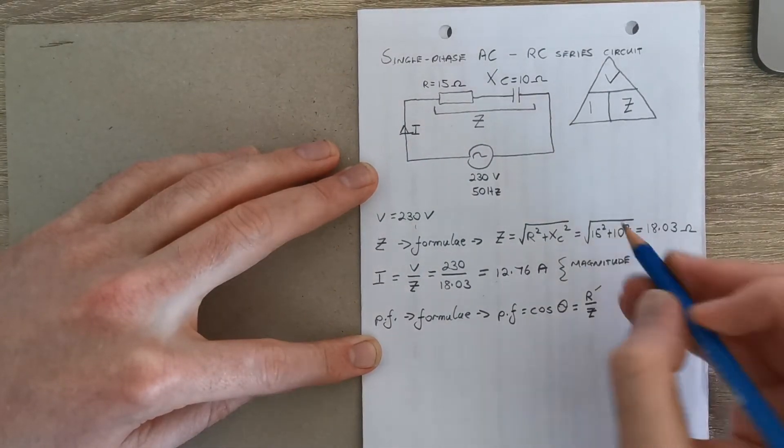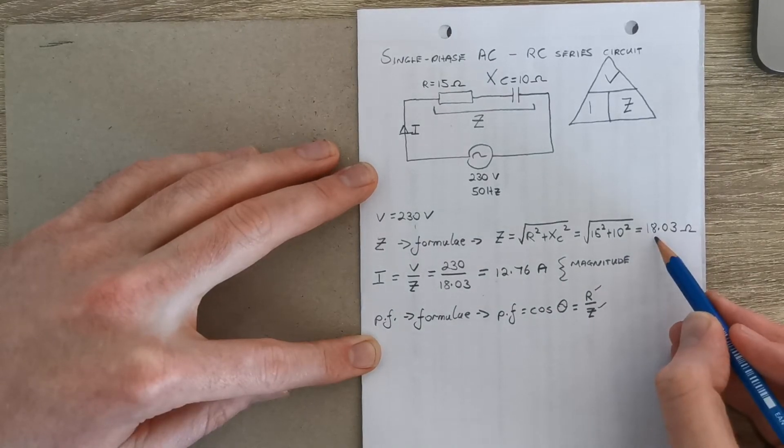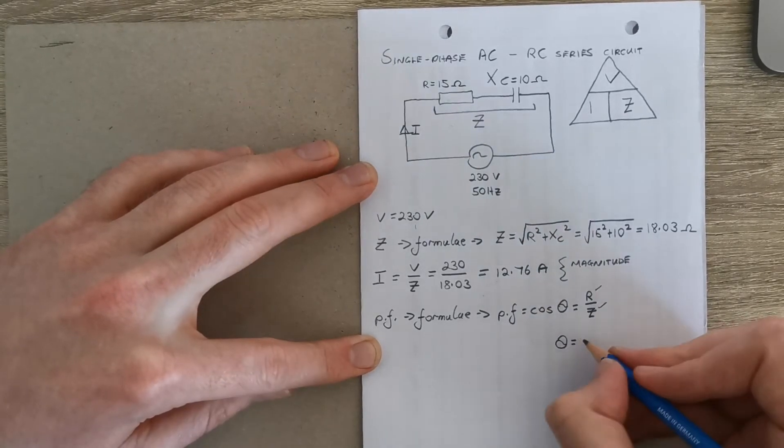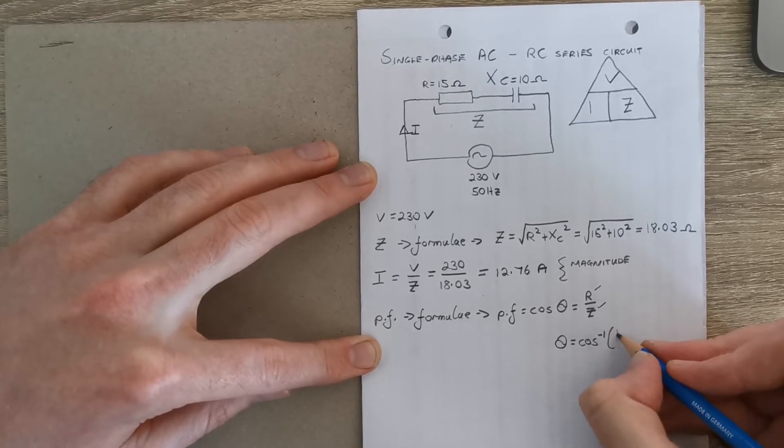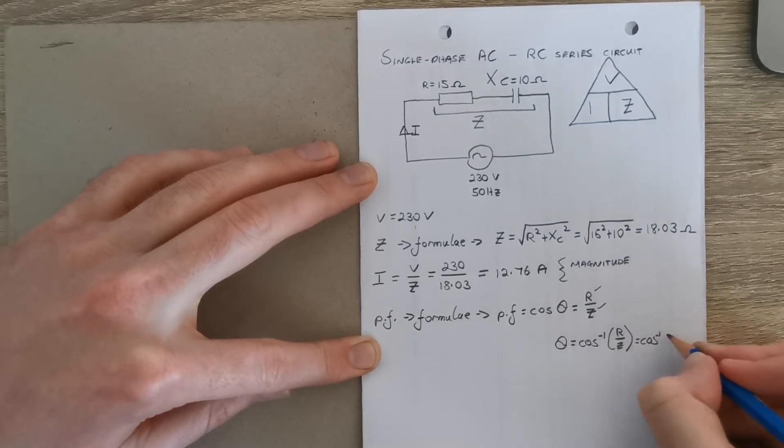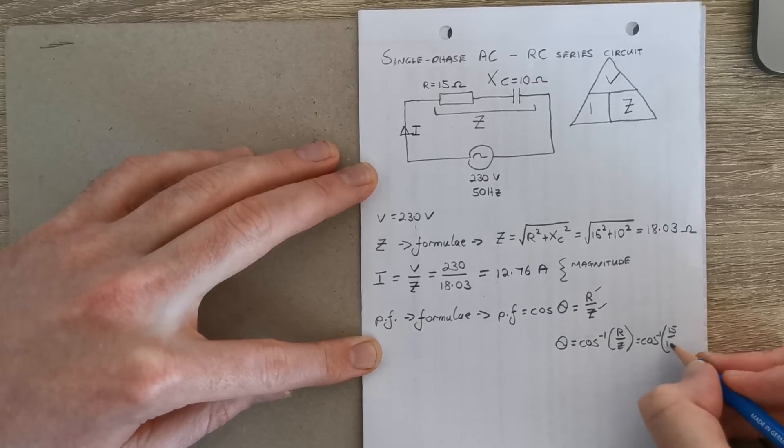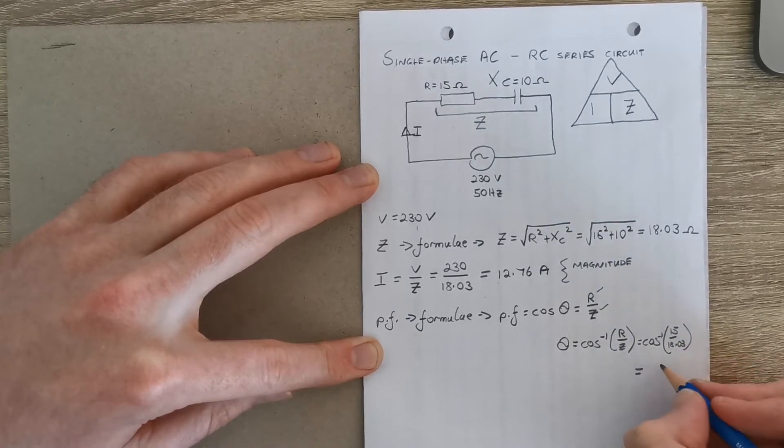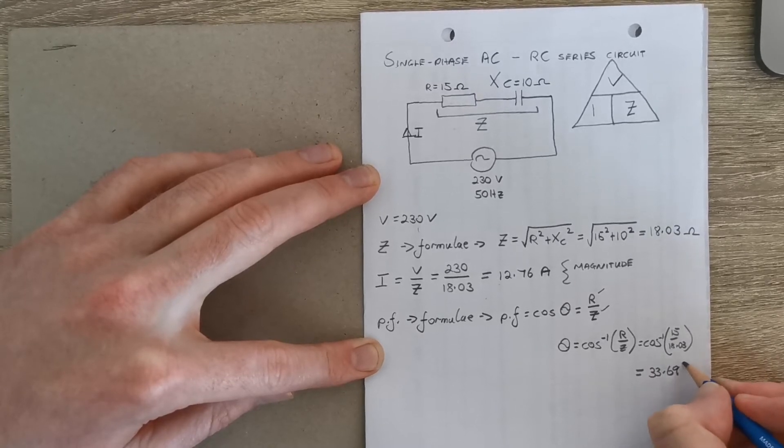So look, we have R given that started question, you calculated Z up at this part here. So we can rearrange this equation now to work out that the angle is going to be the cos inverse of R over Z, which would be the cos inverse of 15 over 18.03. And we're not stuck for space, we'll throw it down here, that'll be 33.69 degrees.